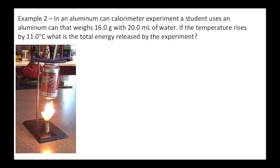Here's another experiment. You got an aluminum can calorimeter a student uses - the can weighs 16.5 grams with 20 milliliters of water. If the temperature rises by 11 degrees, what's the total energy released by the experiment? We don't know what the initial temperature was and what the final temperature was, we just know it changed by 11. So delta T is 11.